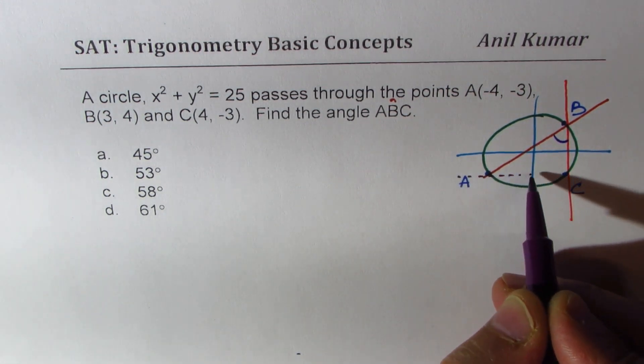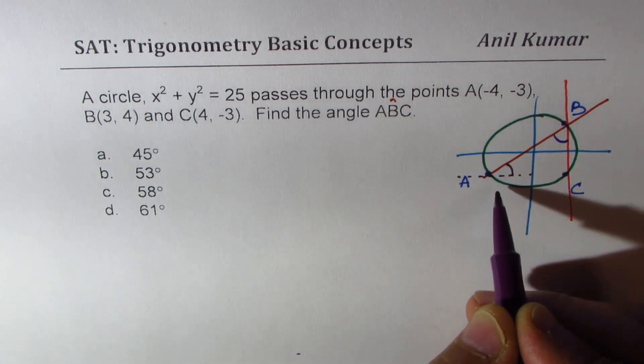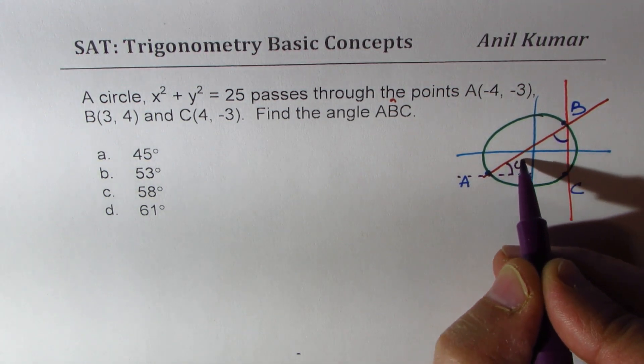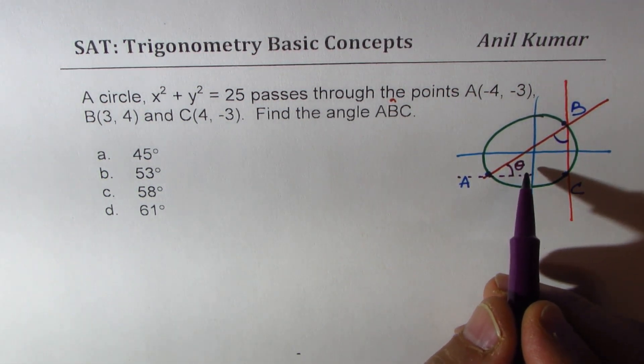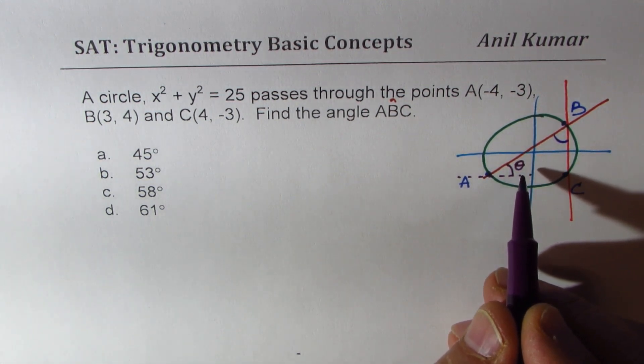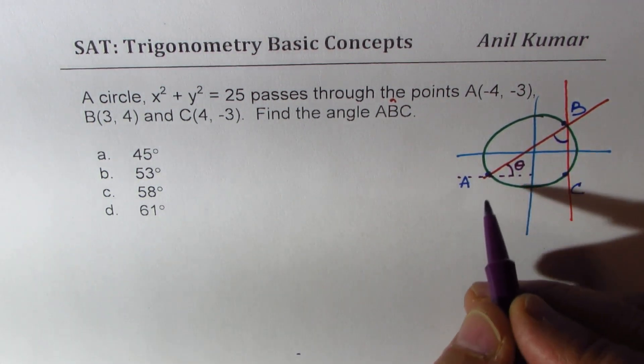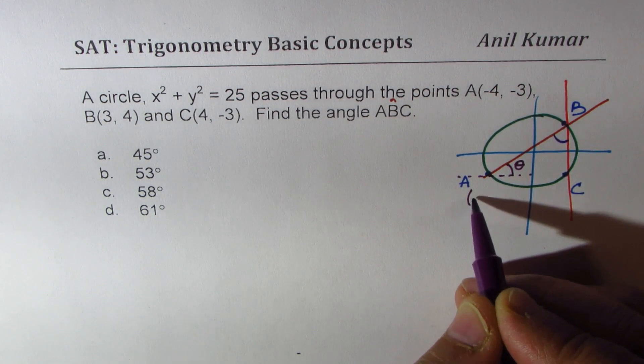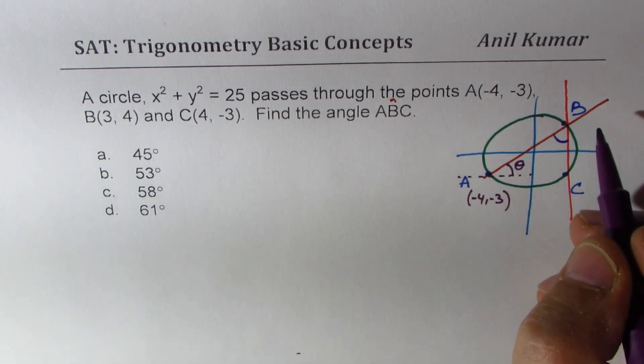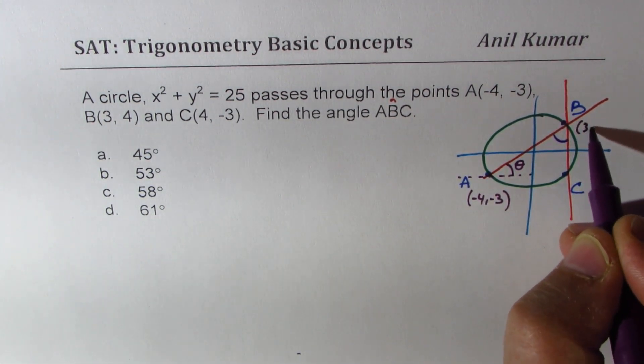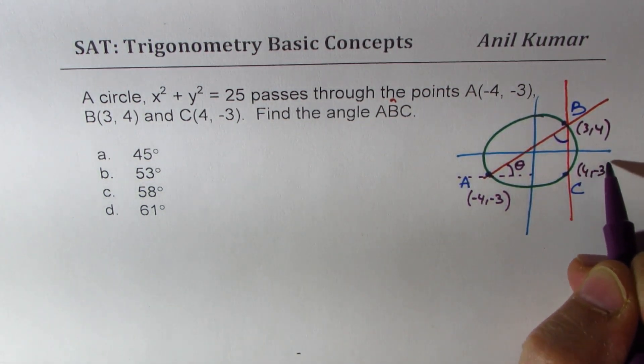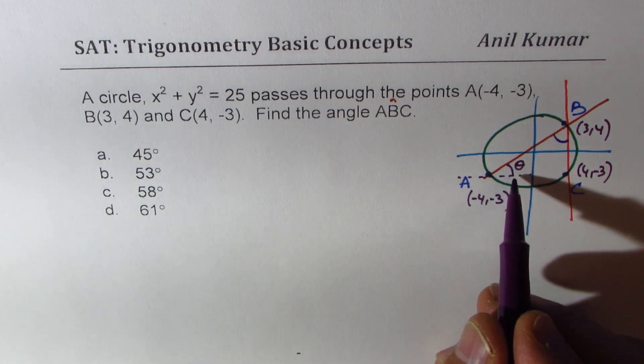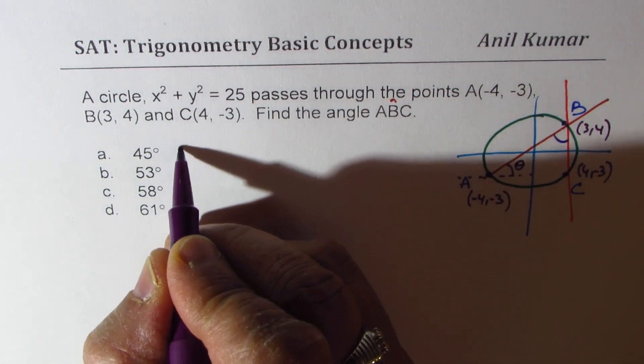So if I draw a horizontal line here, I can find this angle. Let me call this angle as θ. How can I find it? This θ is actually the slope, right? We know point A is (-4, -3), B is (3, 4). Let me write down, and C is (4, -3).